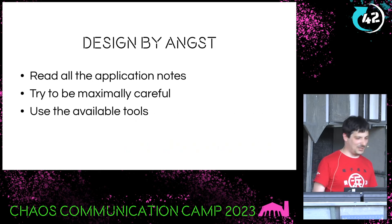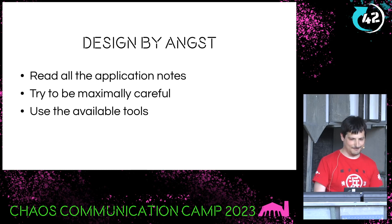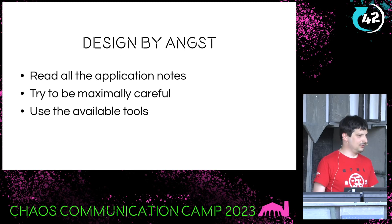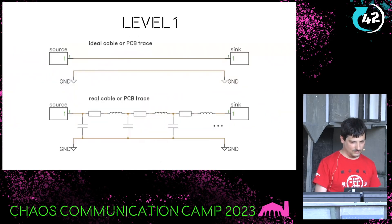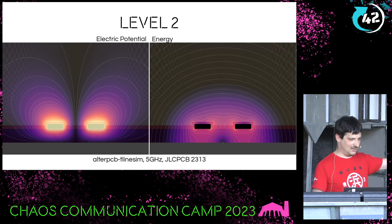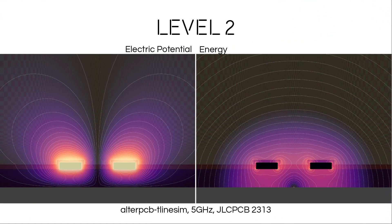The end result is what I call design by angst. All I could do was read as much as I could find, read the application notes for the chips I'm using, try to be as careful as possible, and use the tools I had available. I found a very buried tool from a discontinued PCB suite called Altium PCB T-line sim. You can still find the code by digging around on GitHub, but you need to build it yourself. It's a very odd tool, but it was the limit of what I had access to.